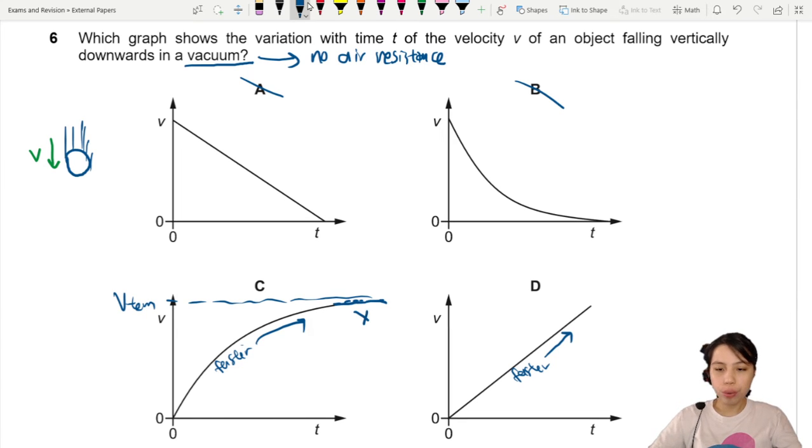There is no terminal velocity if there is no air resistance. So no, we don't need that. This is the choice that we can choose for our graph of a falling object where, because there is no drag force, the acceleration, which is the gradient, is constant. 9.81.